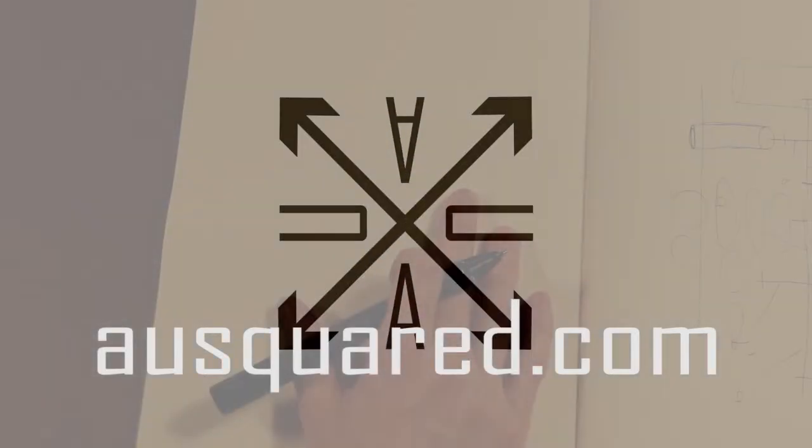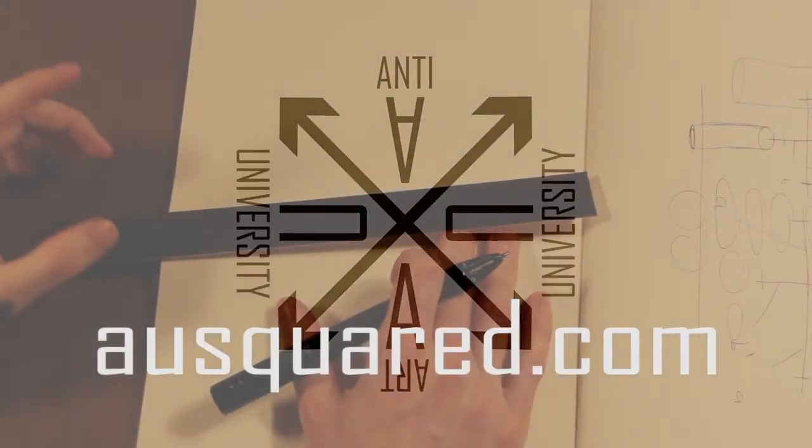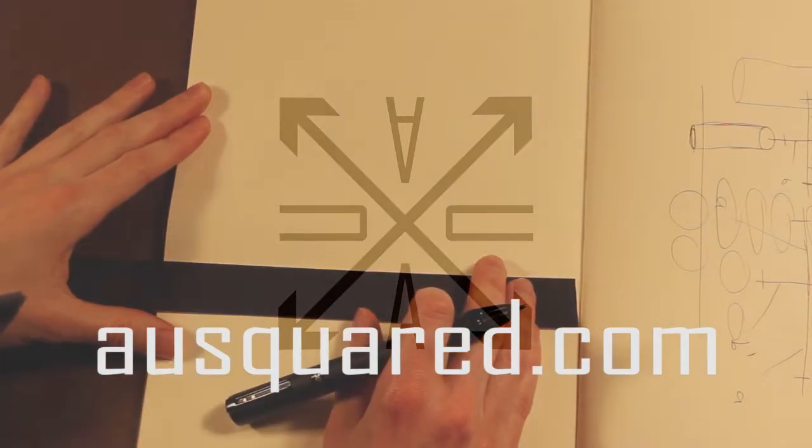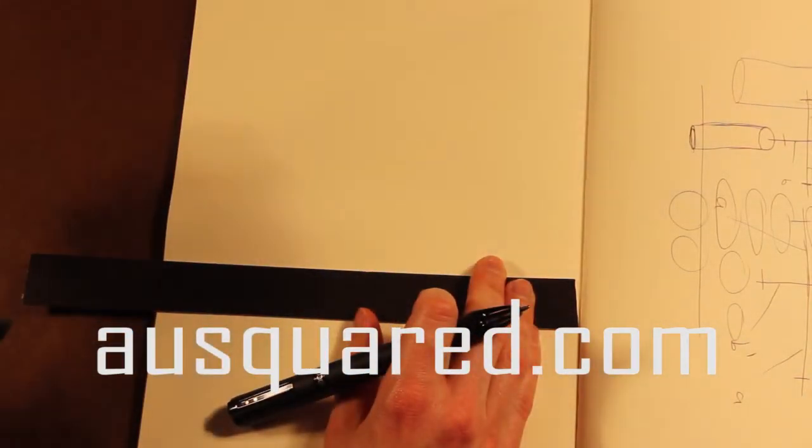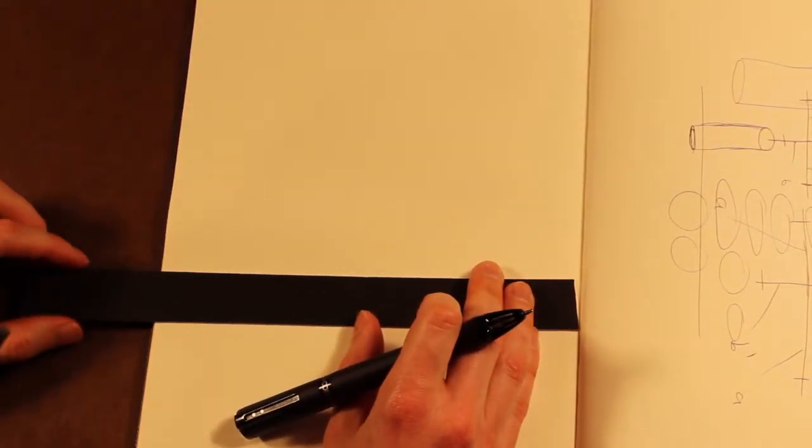So, we saw where one point perspective broke down earlier and of course, logically, if one point perspective breaks down, two point perspective can break down as well.